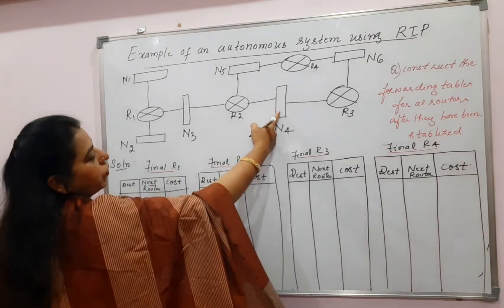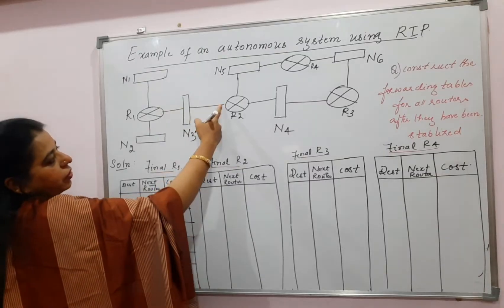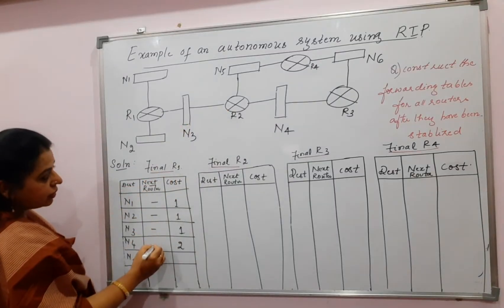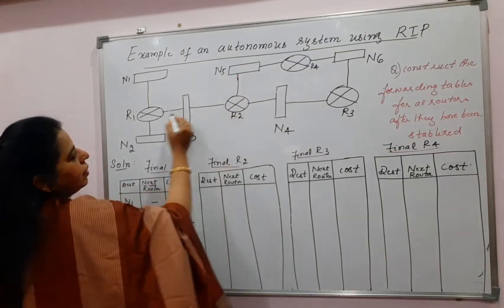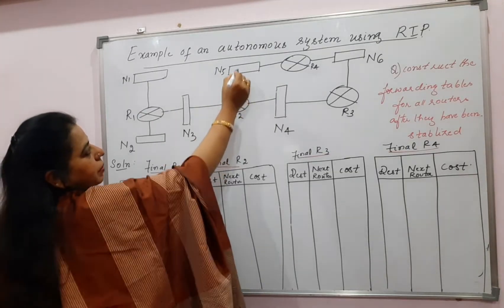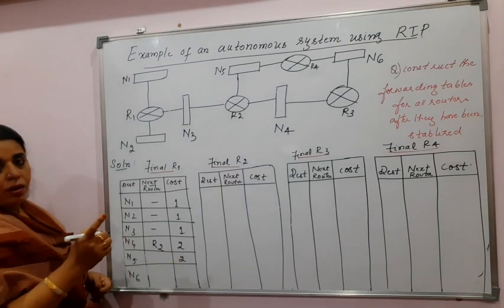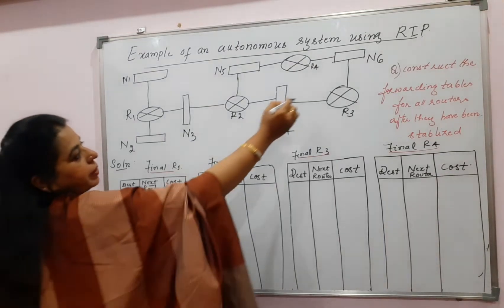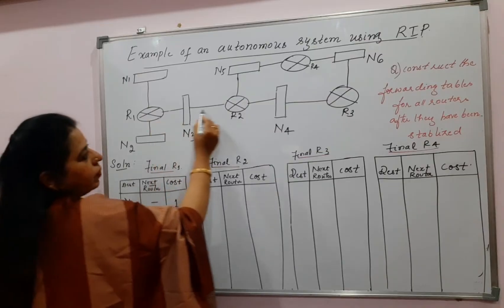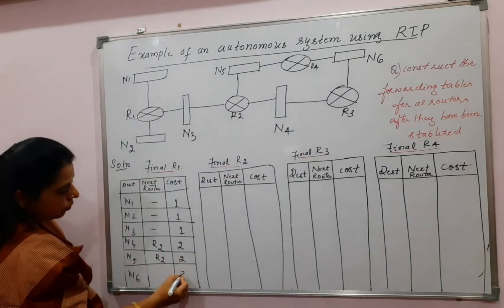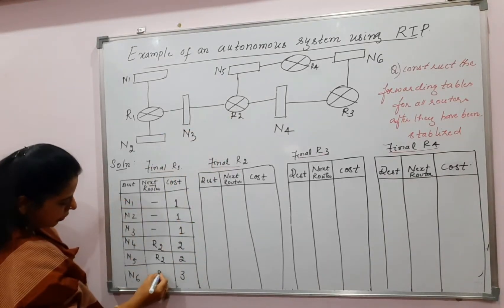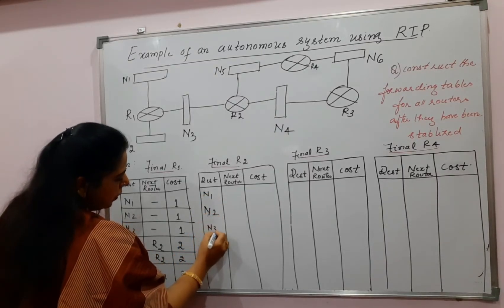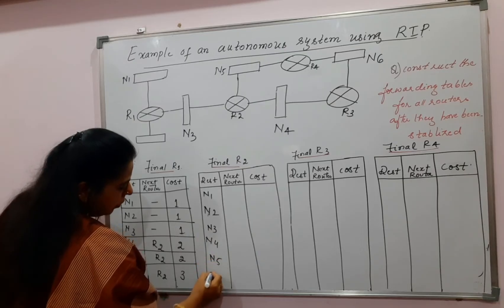Next comes N4. It crosses one network then a second, so the cost is two hops, and it has to go via R2 — so the next router is R2. For N5, similarly the cost is two hops and the next router is R2. For N6, from R1 it is one hop, two hop, and the destination is the third hop, going via R2. This completes the forwarding table for R1.